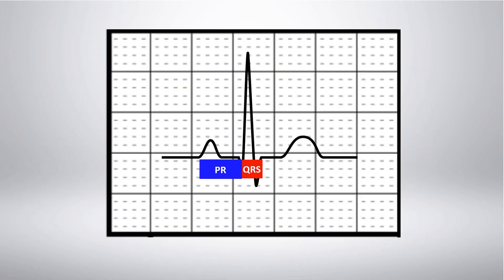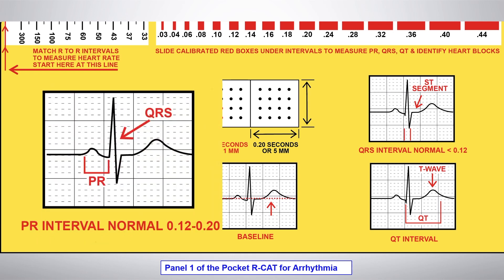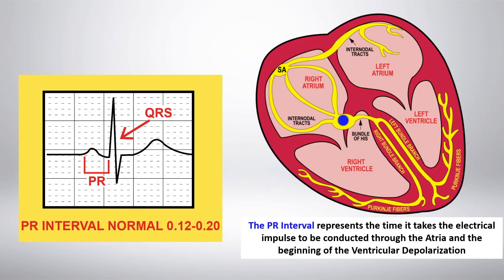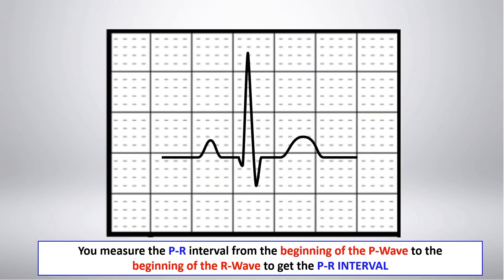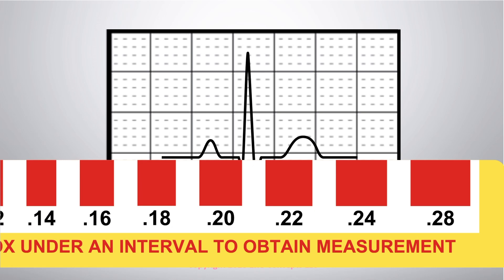Now we'll examine the PR, the QRS, the ST, and the QT segments. The PR interval represents the time it takes the electrical impulse to be conducted through the atria and the beginning of the ventricular depolarization. Because the electrical impulse travels faster than the actual mechanical contractions of the heart muscle, the electrical impulse is delayed in the AV node to let the blood in the atria empty into the ventricles. You measure the PR interval from the beginning of the P wave to the beginning of the R wave. Using the calibrated red boxes on the EKG badge, you can accurately measure the PR interval — here you have a PR interval of .20, which is within the normal range of .12 to .20.